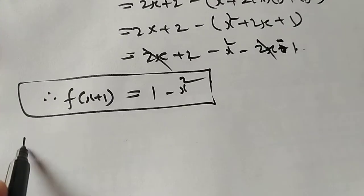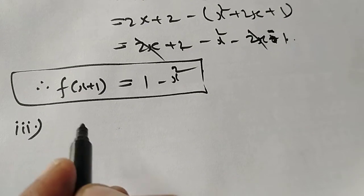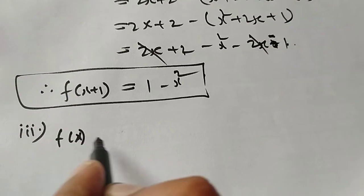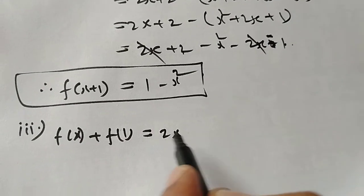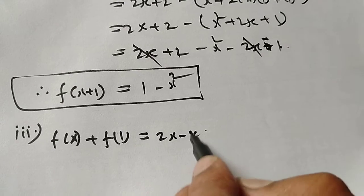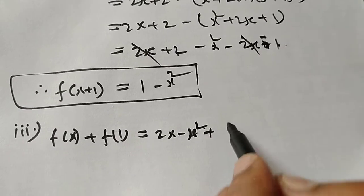Next, third one: f of x plus f of 1. f of x is the given function, 2x minus x square, plus f of 1. f of 1 is 1.